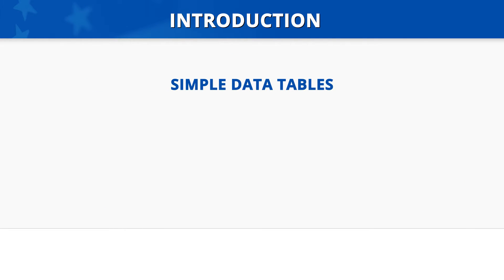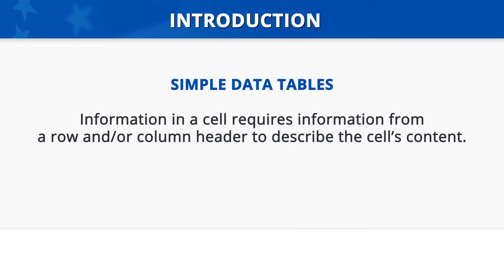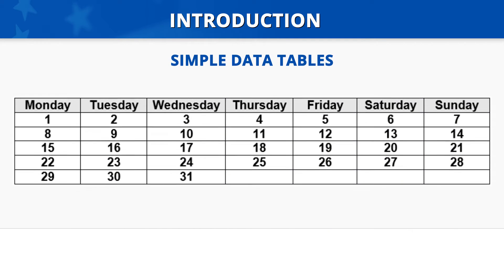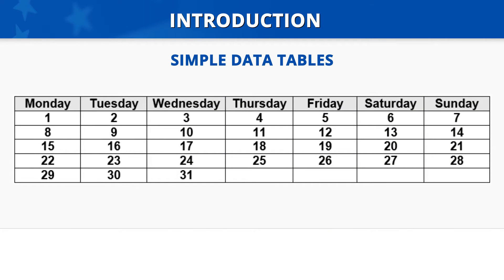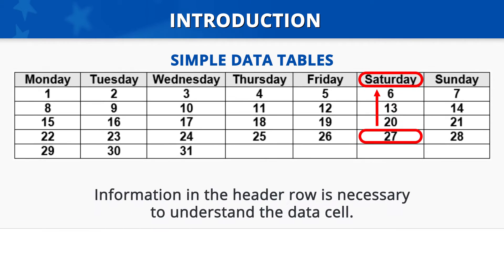Simple data tables are those tables where the information in a cell requires information from a row and/or column header to describe the cell's content. The example on the screen shows a calendar as a table. In order to understand which day of the week the 27th falls on, we follow the column up to the header row to see Saturday. The information in the header row, Saturday, is necessary to understand the data cell 27. This concept is called a header cell association.